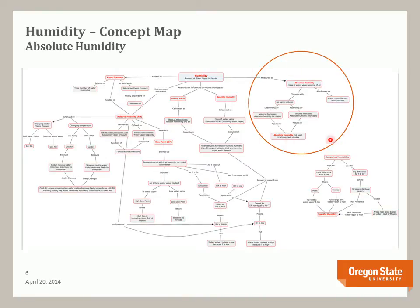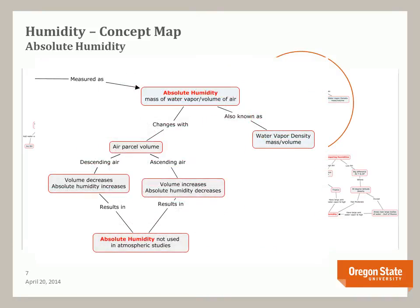Let's first look at absolute humidity. Absolute humidity is the mass of water vapor divided by the volume of air, so it is also known as the water vapor density, measured in mass per volume. As air parcels move vertically in the atmosphere, they change volume because of changing pressure. Lower in the atmosphere, higher air pressure means that as an air parcel descends, pressure increases, volume decreases, and absolute humidity increases — the opposite for ascending air. Because of this behavior, absolute humidity is not used in atmospheric studies.